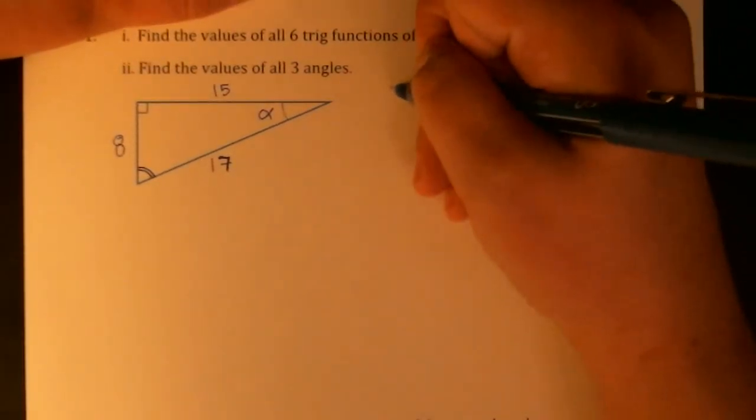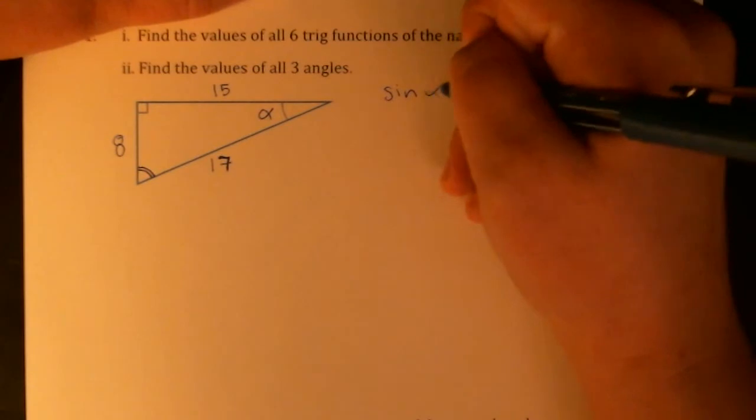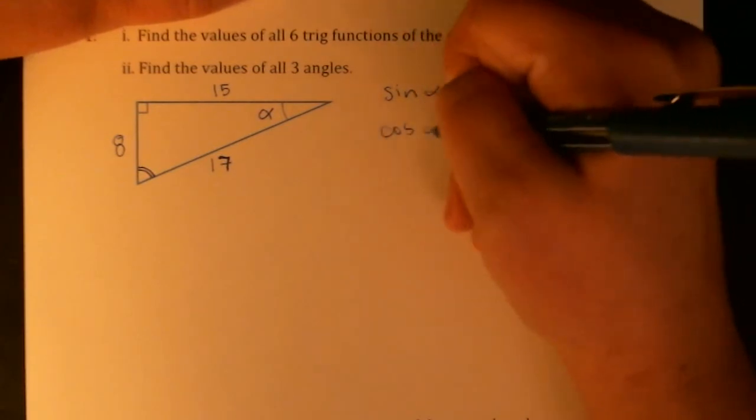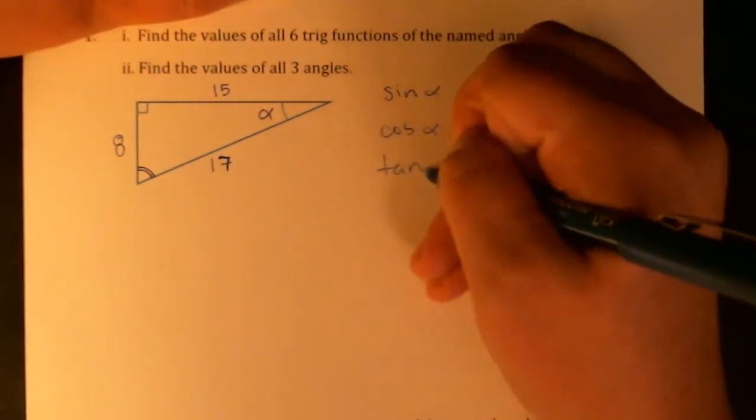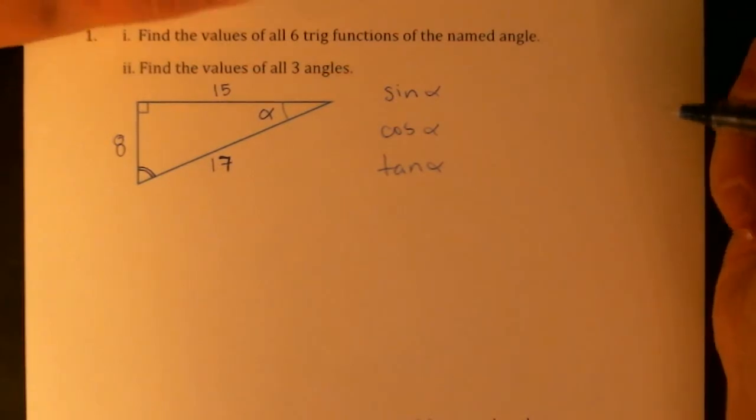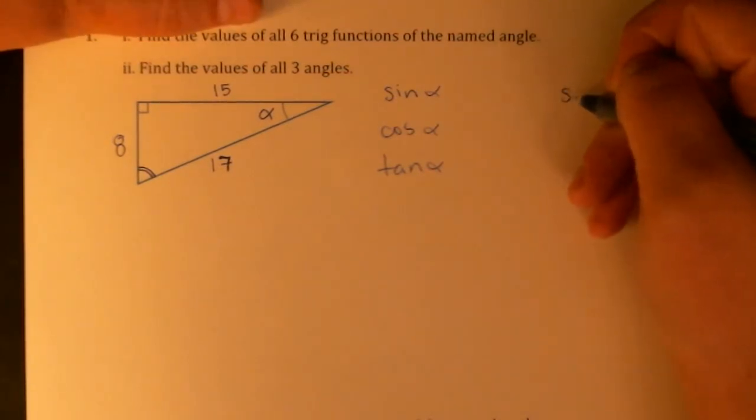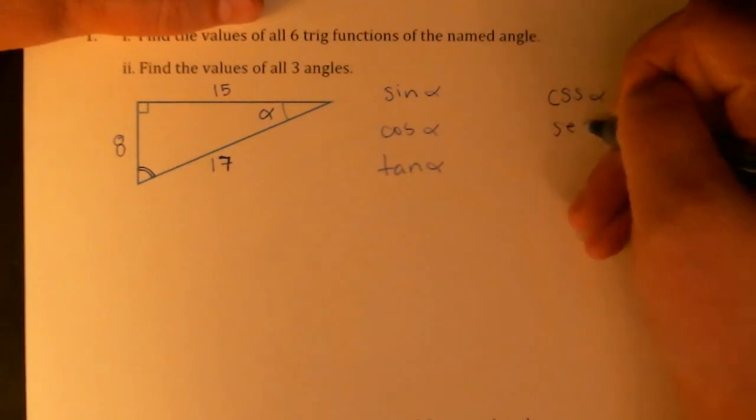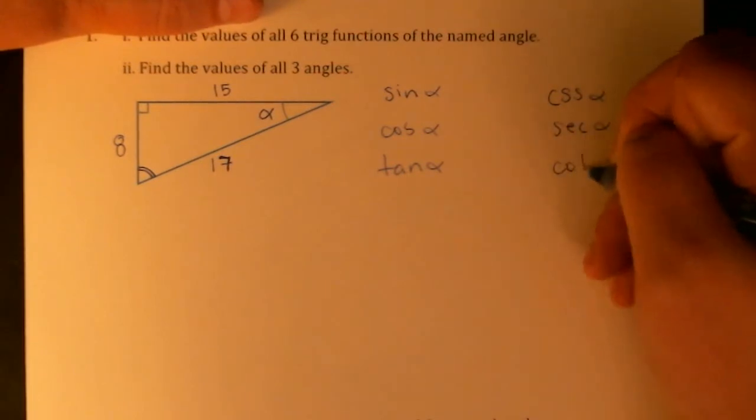So I'd like to find sine alpha, cosine alpha, tangent alpha, and then we can find their reciprocals fairly easily: cosecant alpha, secant alpha, and cotangent alpha.